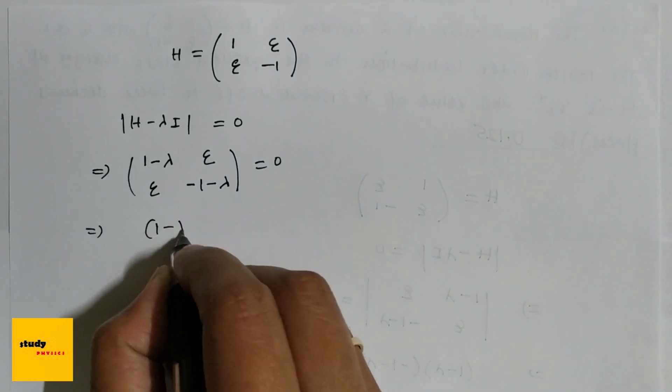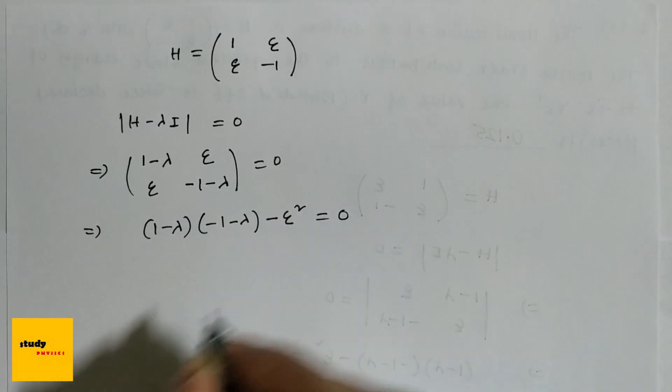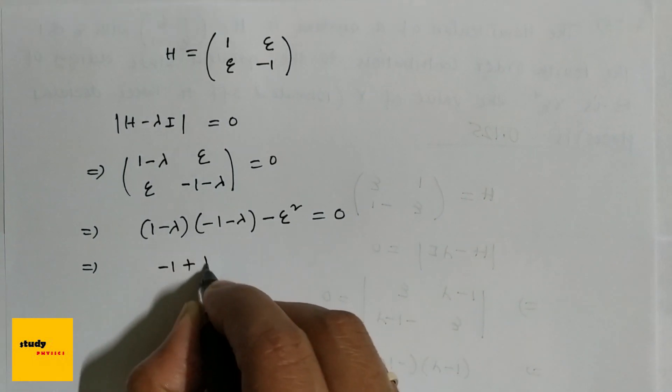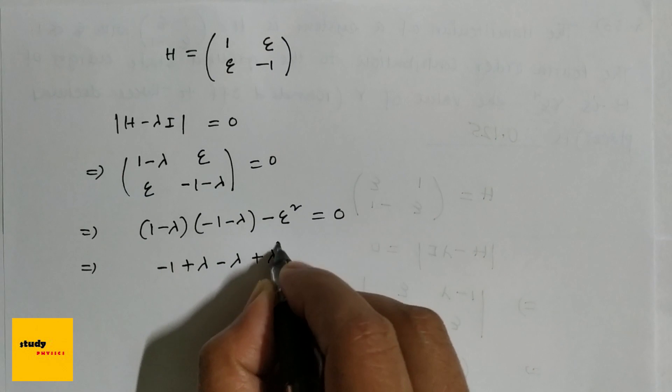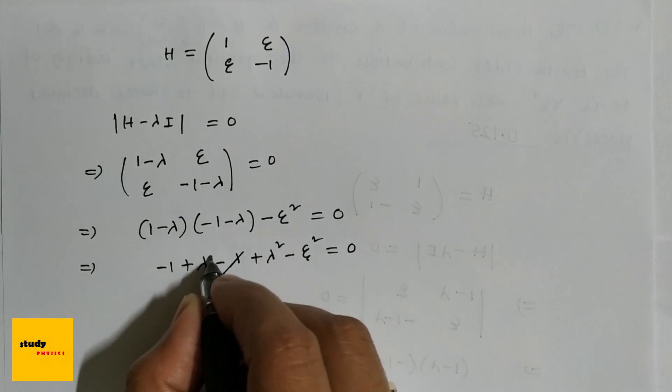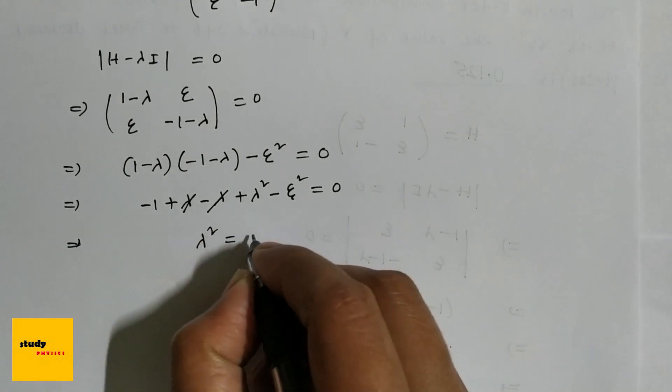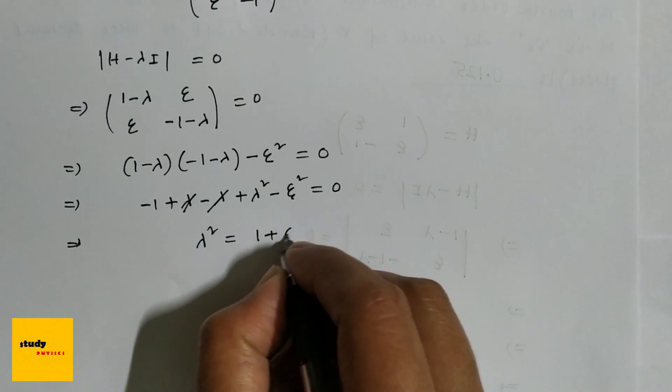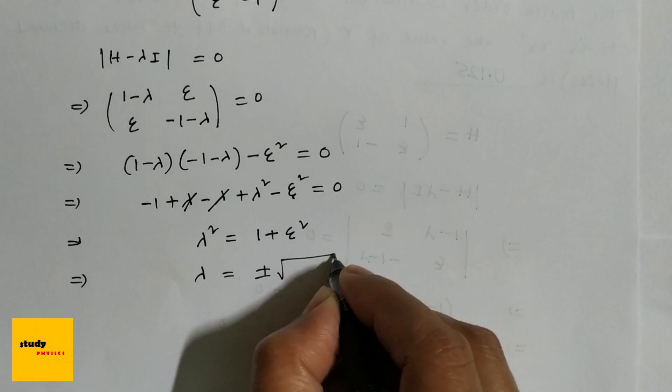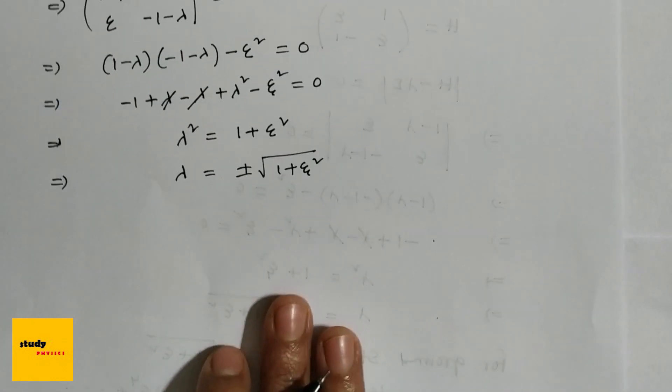Expanding the determinant: (1-λ)(-1-λ) - ξ² = 0, which gives -1 + λ - λ + λ² - ξ² = 0. So λ² = 1 + ξ². From here, λ = ±√(1+ξ²). For ground state, λ = -√(1+ξ²).